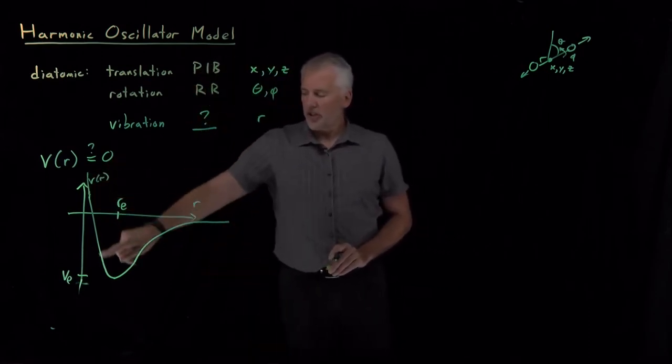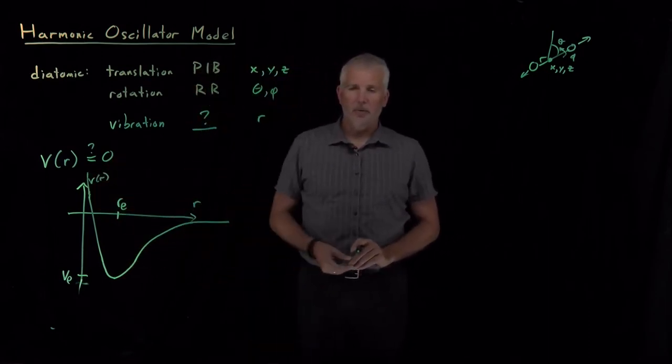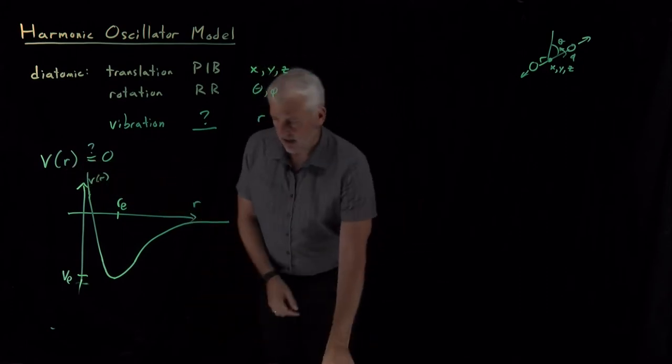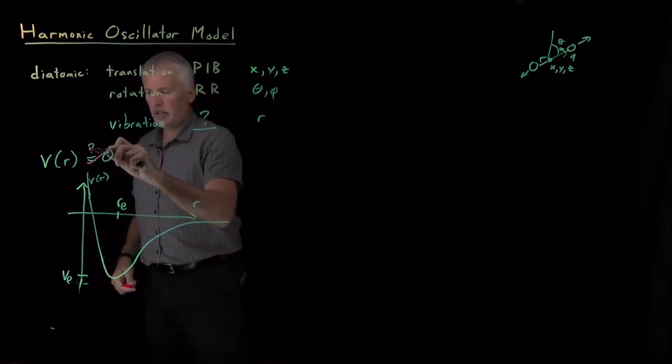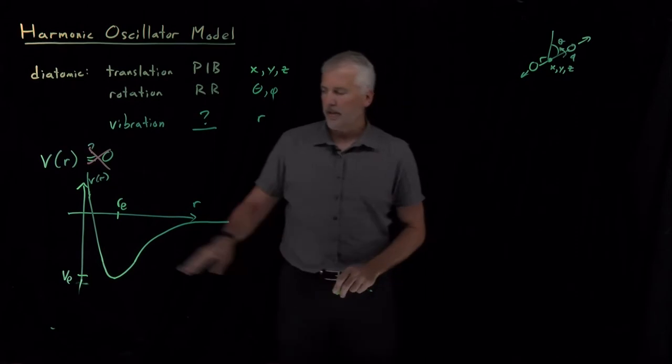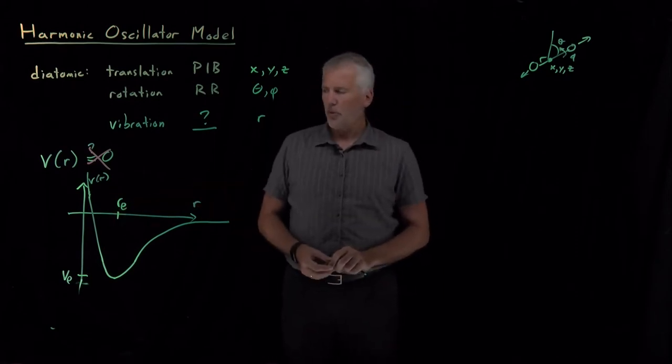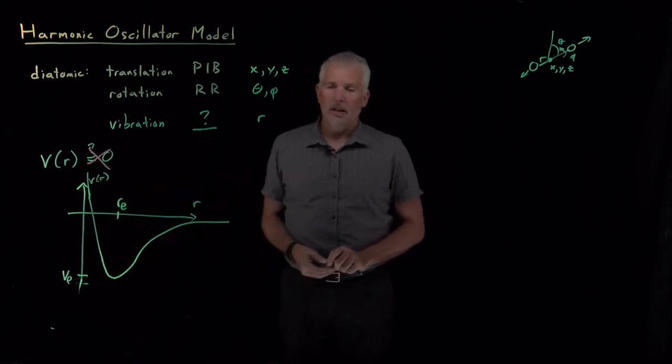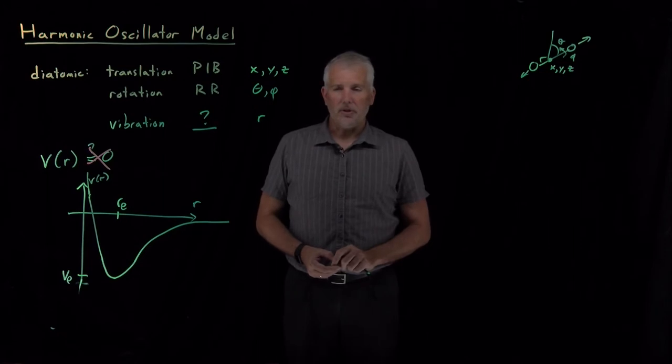So this is a general shape, qualitatively anyway, for what the potential energy should look like. And it's not a very good approximation to say that I can approximate that curve with just a flat V equals zero curve. So we're going to have to do a little bit more work to do the quantum mechanics this time. We'll have to figure out what this potential energy curve looks like and how to insert it into Schrodinger's equation.